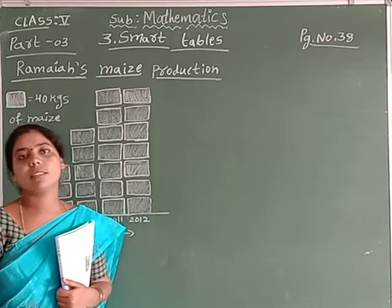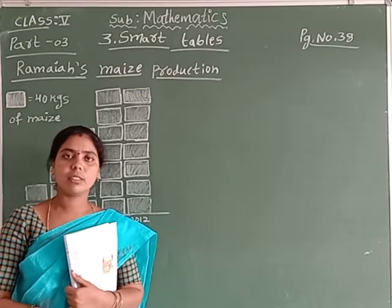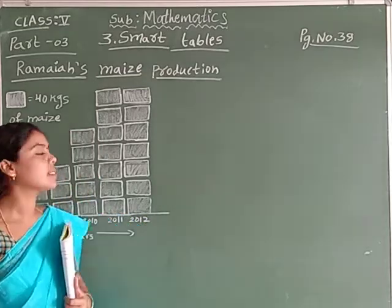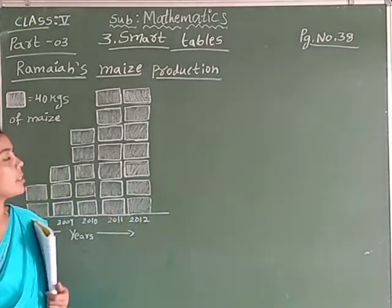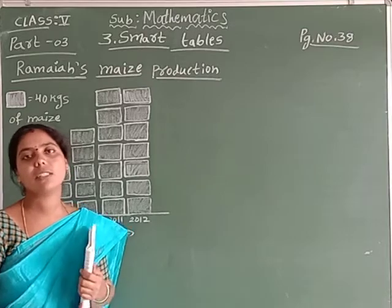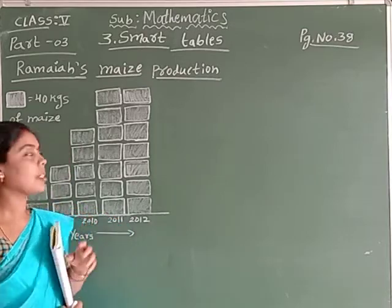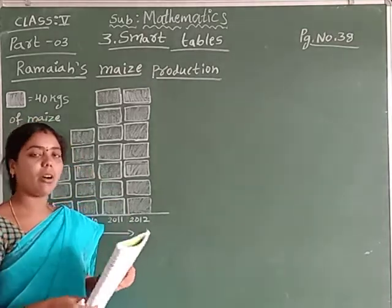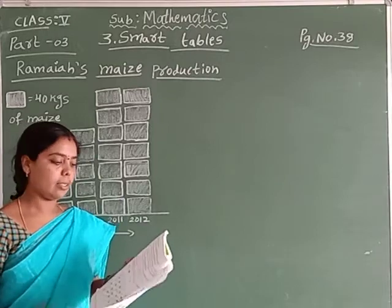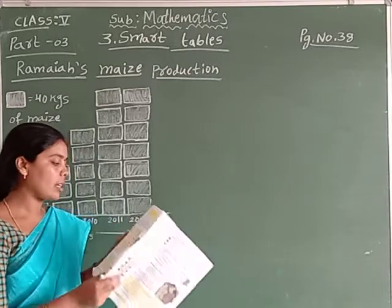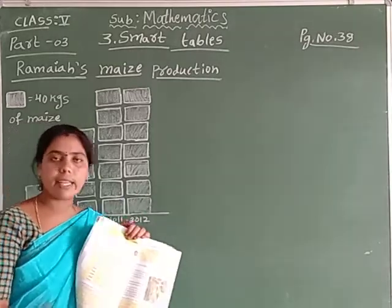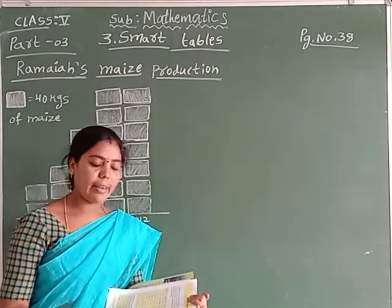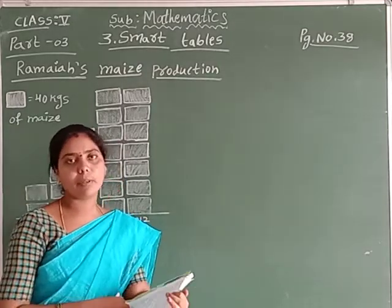Hello children, how are you? Now, fifth class mathematics — hard circles, smart tables. In the previous class, I explained only part 2. Now, part 3. In the previous class, I explained the algorithm, the tally marks, and writing numbers, counting numbers.